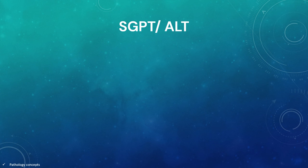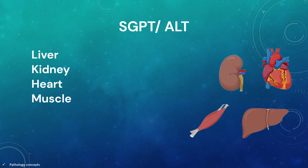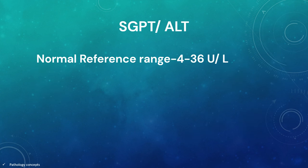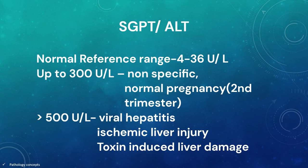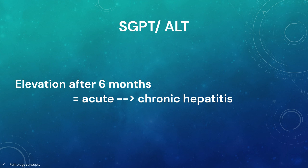Let's learn about SGPT, also called ALT. It is synthesized in liver, kidney, heart and muscle. The normal reference range for SGPT is 4 to 36 units per litre. If the rise in SGPT is up to 300 units per litre, then it can be nonspecific and can be seen in normal pregnancy in the second trimester. If SGPT is elevated more than 500 units per litre, then the causes are viral hepatitis, ischemic liver injury, and toxic induced liver damage. And if SGPT elevation is noted even after 6 months, then we can state that acute hepatitis has converted into chronic hepatitis.